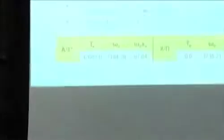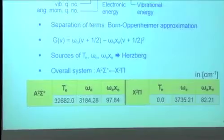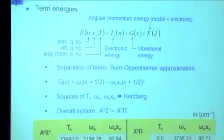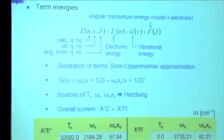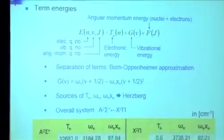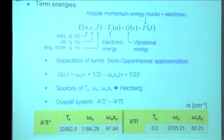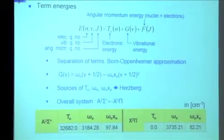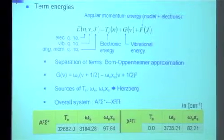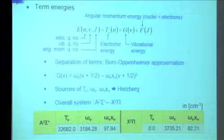In most cases you're following what somebody else has already done — they used the Q16 transition at such and such a wave number, you're going to do it too. You know the wave number, you set the wavelength of your laser and follow in somebody else's footsteps, using their oscillator strengths. It's not as hard as it's all made out to be.